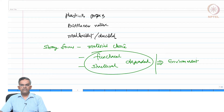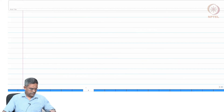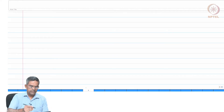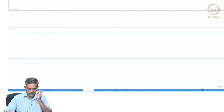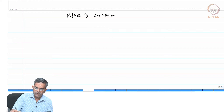At any point of time, the material should not expose or initiate a catastrophic failure. It should give sufficient warning before it fails. Now, let us see what are the effects of environment on materials.